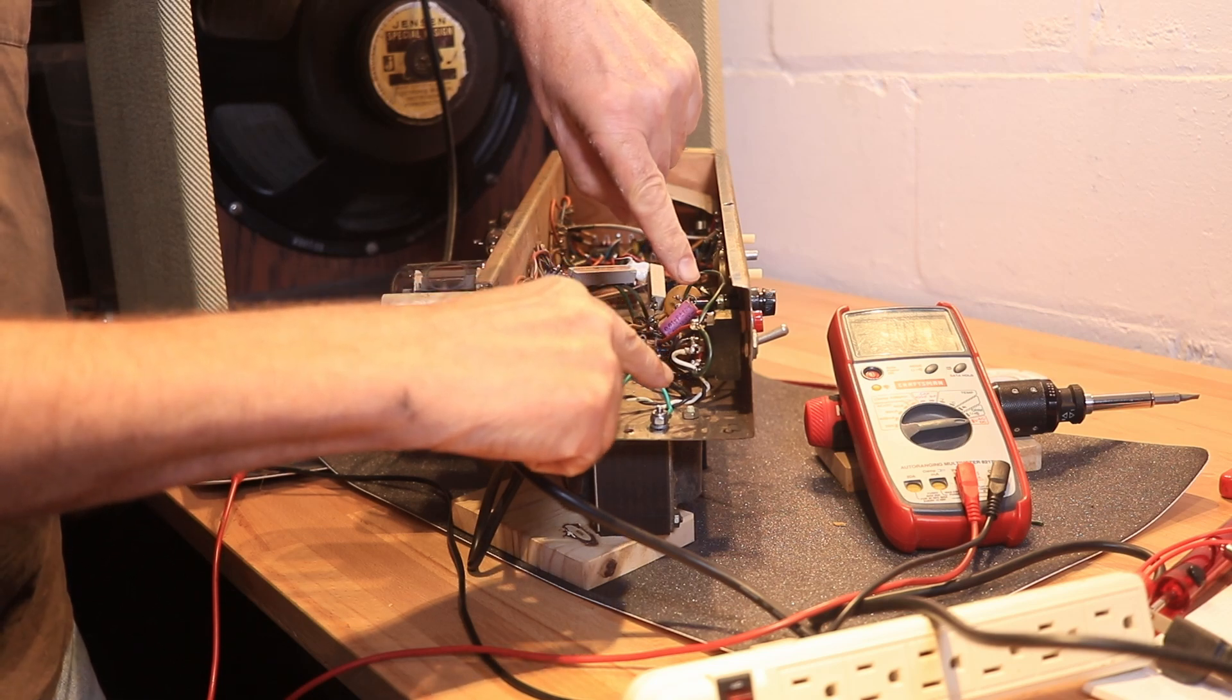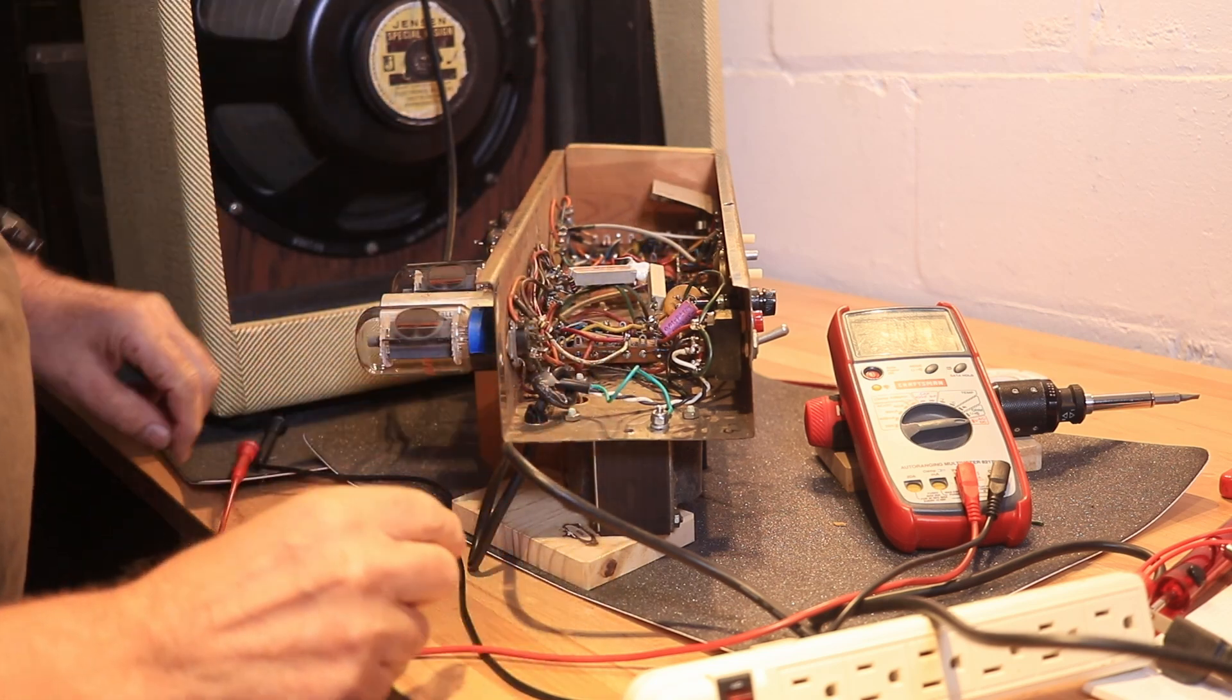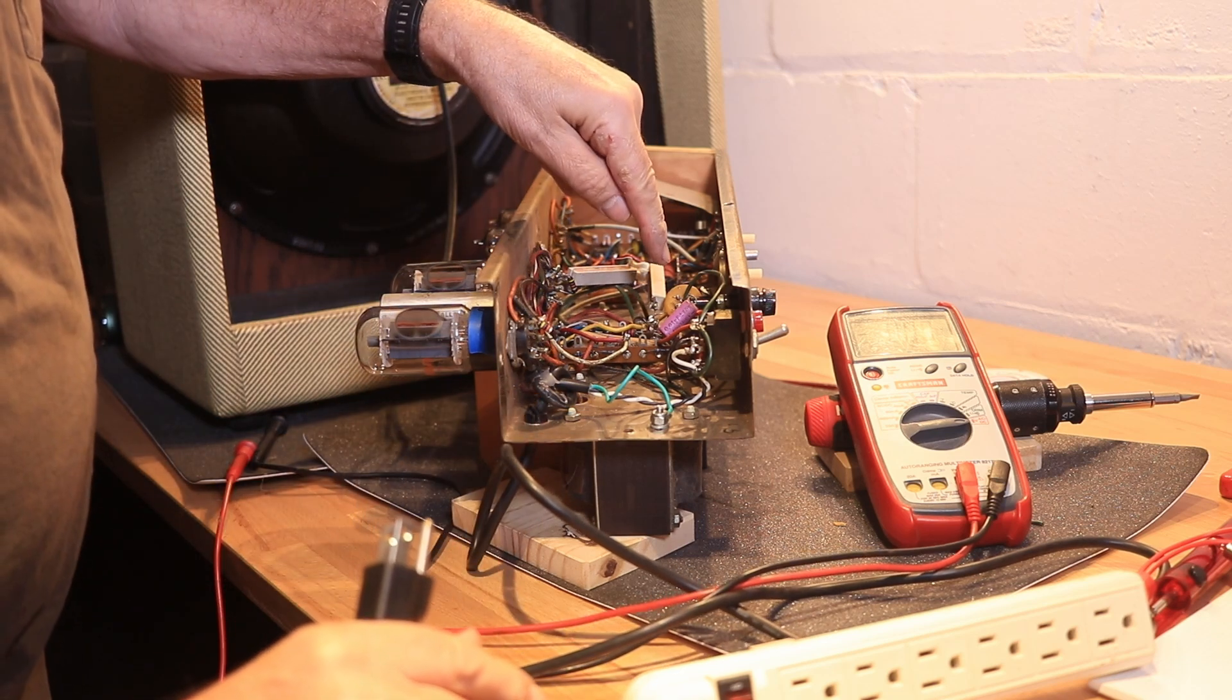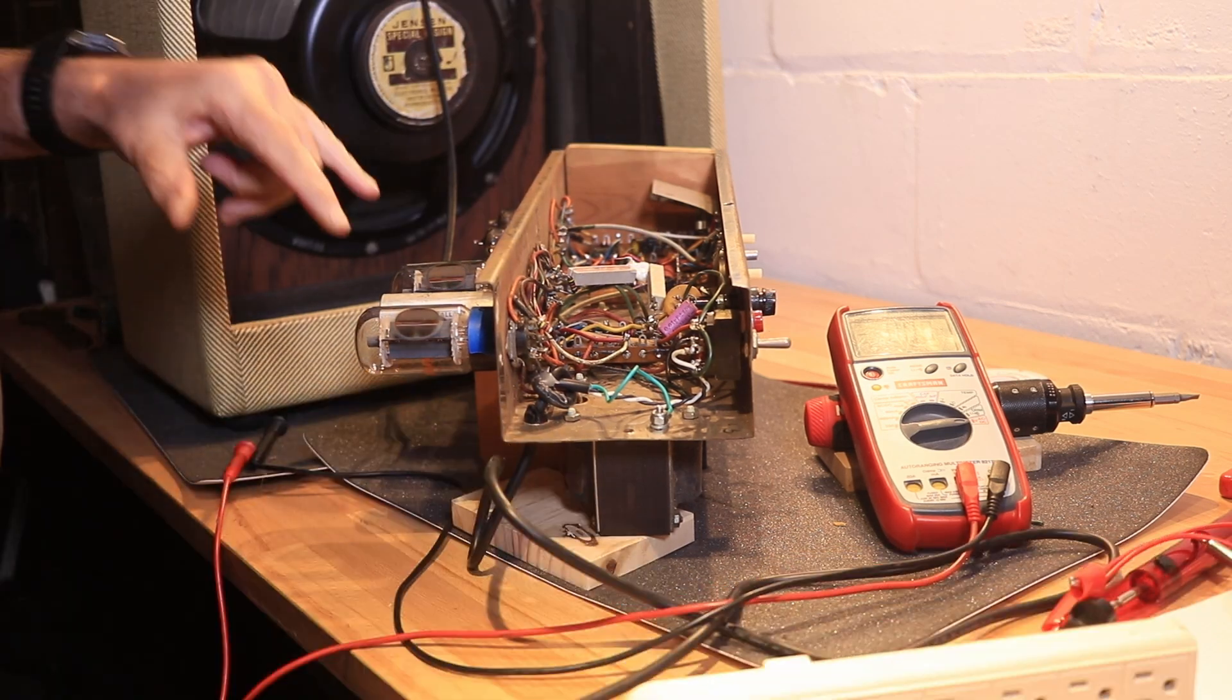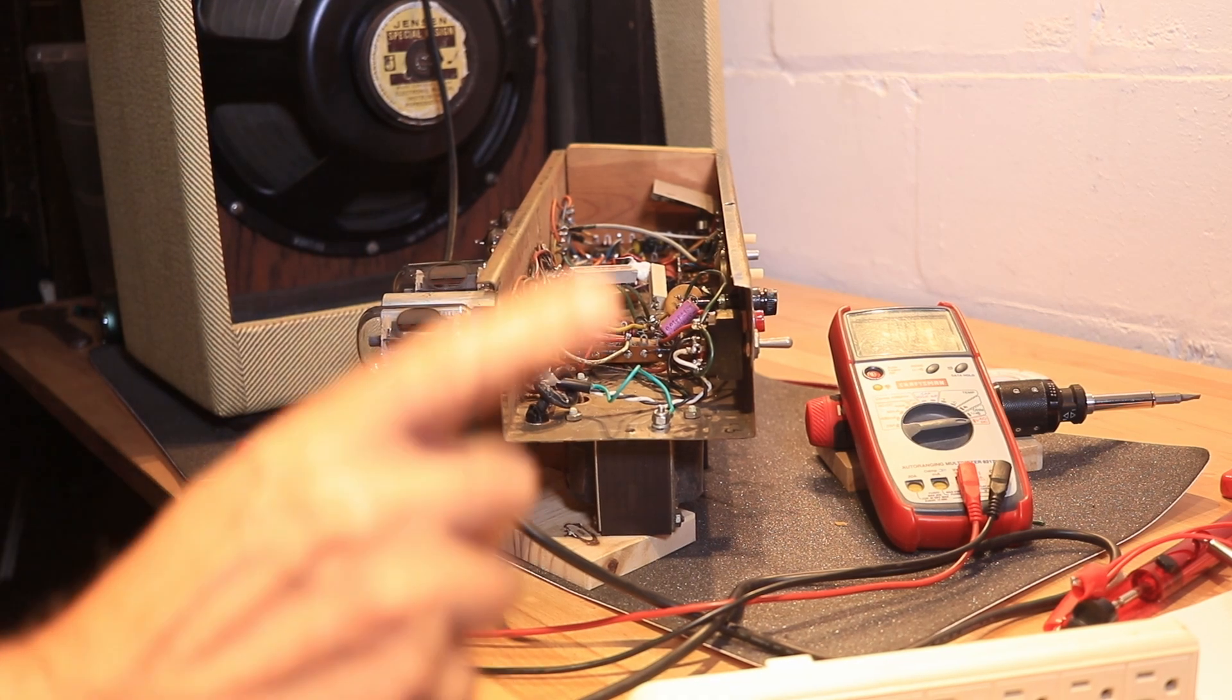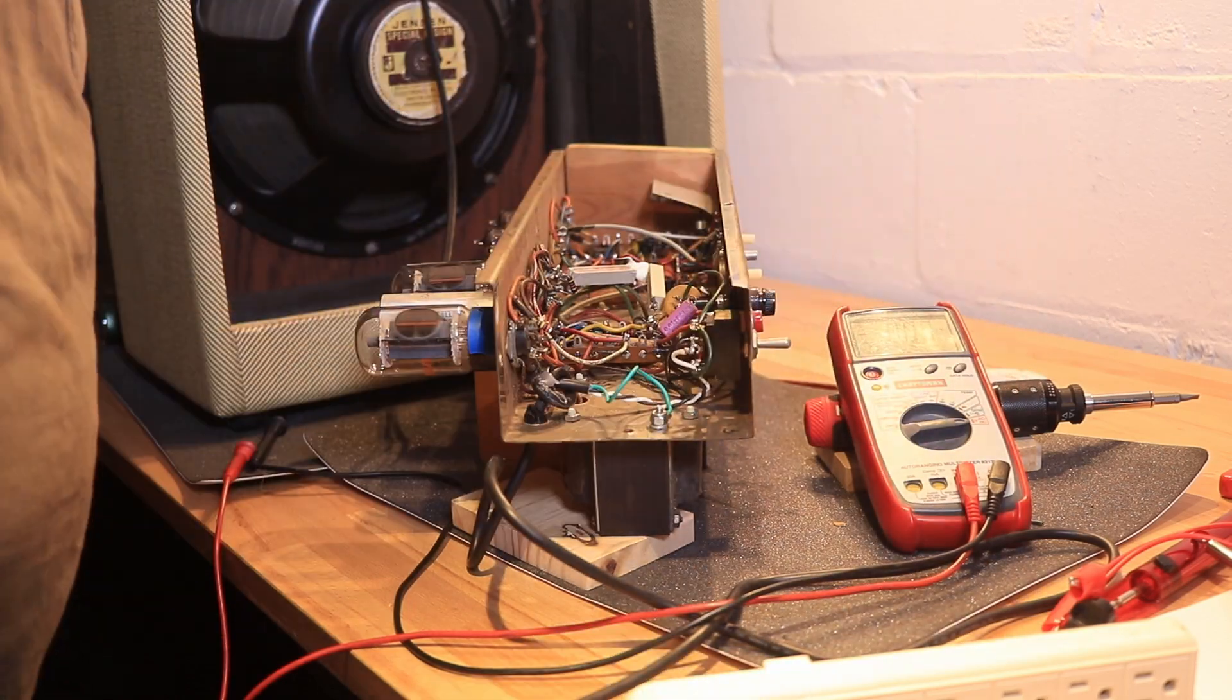I got the wires switched around so that, theoretically, the live wire coming in should not be connected through the capacitor to the chassis. I put the tubes back in, connected it to the speaker. I think I want to do one more thing. I want to connect something to the input.